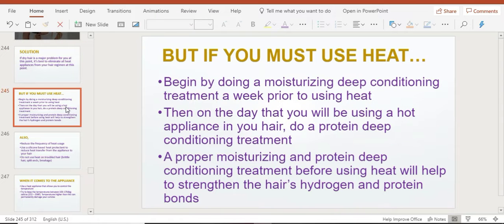But if you must use heat—because sometimes you need to go get your hair done cornrowed and it's better to go with your hair blow dried for the hairdresser—then you have to make sure that you deep condition your hair. You want to start a week in advance using a moisturizing deep conditioner, and then the day before you blow dry your hair, you want to do a protein deep conditioning treatment.